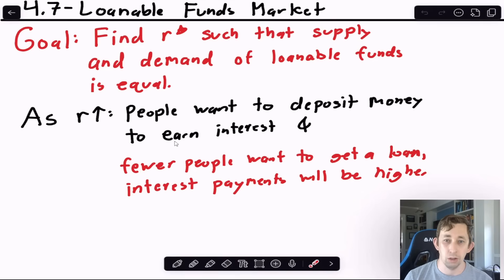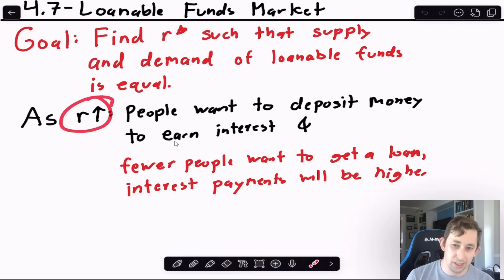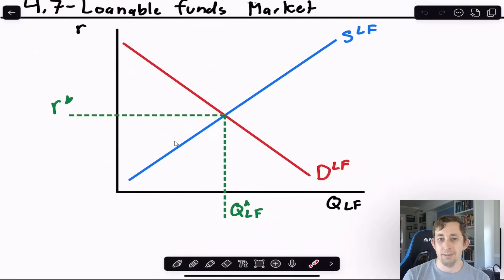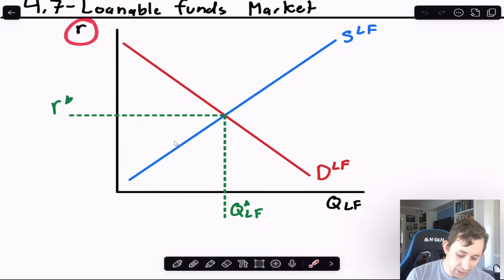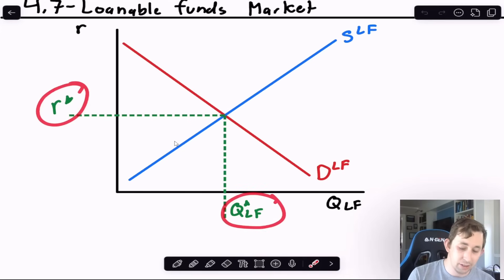On the demand side, a higher real interest rate makes borrowing more expensive, so demand for loanable funds decreases. This gives us an upward-sloping supply curve and a downward-sloping demand curve in the loanable funds market. Where they intersect tells us the equilibrium real interest rate and quantity of loanable funds that prevails in this market.